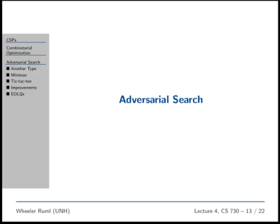So we've talked about three kinds of problems so far: shortest path problems, constraint satisfaction problems, combinatorial optimization problems. And I'm going to add just one more fourth type, which is problems where you have an adversary.